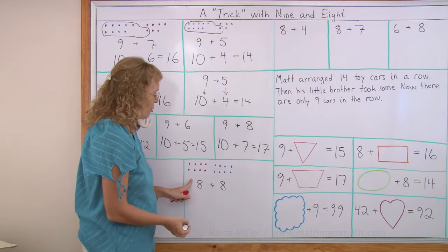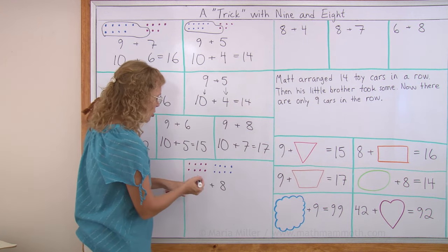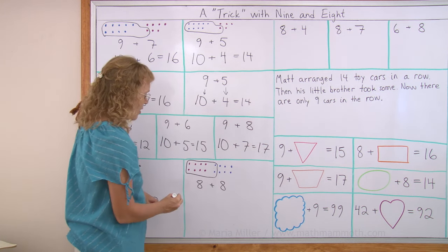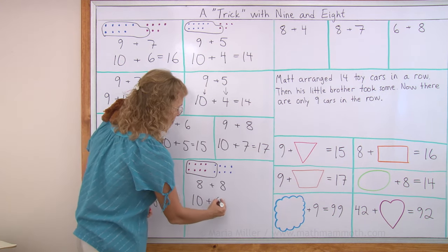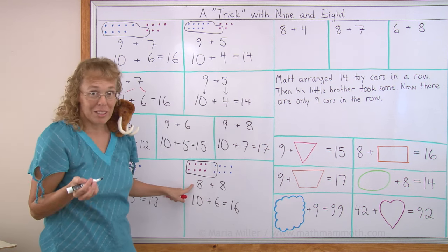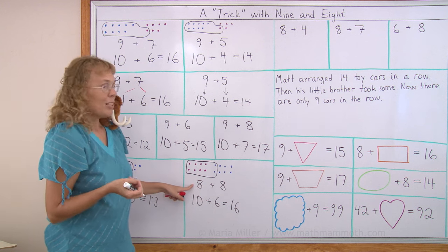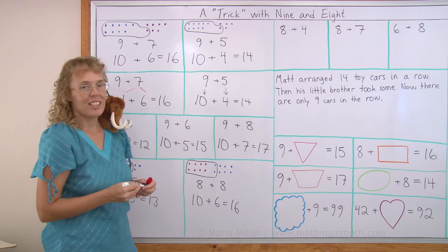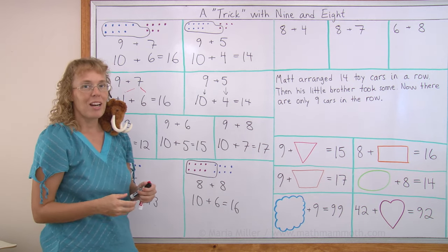Again, 8 wants to be 10. So it calls to the other 8 and says, 8, can I get 2 from you? And the other 8 says, sure, go ahead. And then 8 becomes 10. But this other 8 becomes just 6. And we get 10 plus 6. 16. Now notice this is also one of our doubles that we studied in the last lesson. So maybe you even remember what 8 plus 8 is, that it's 16, without using the 8 trick. You don't have to use the trick if you know the sum by heart already.